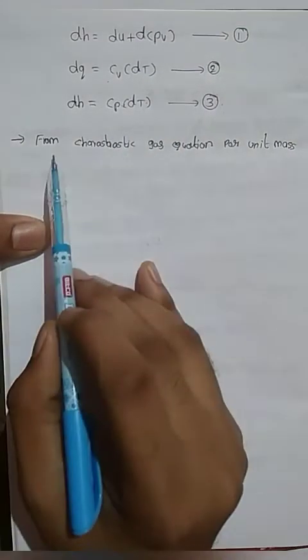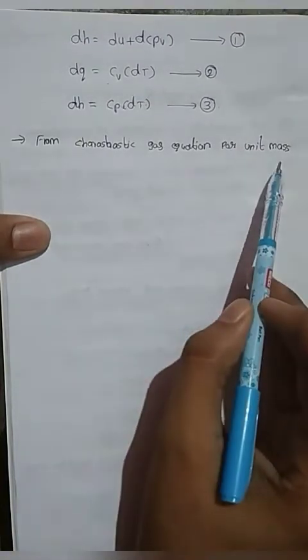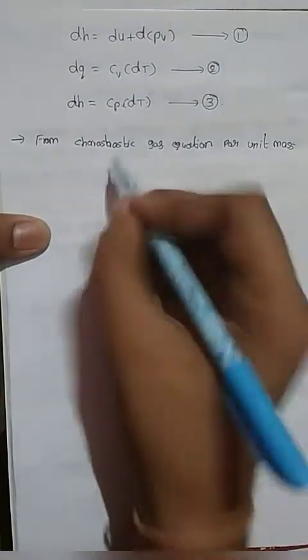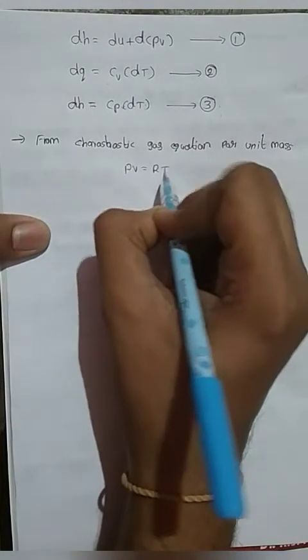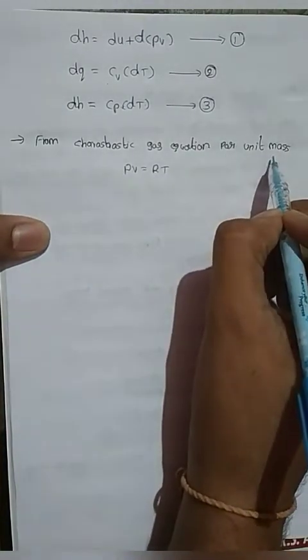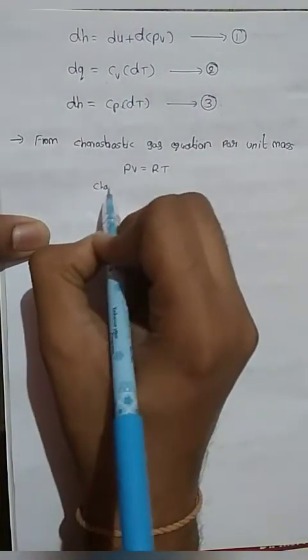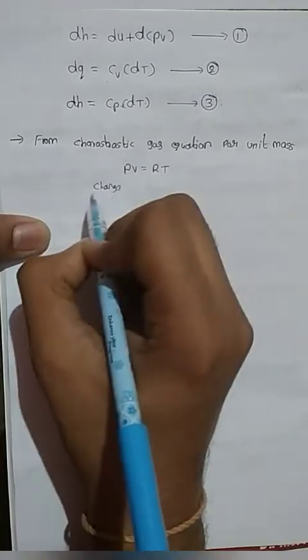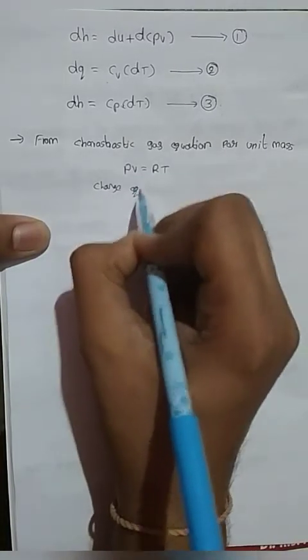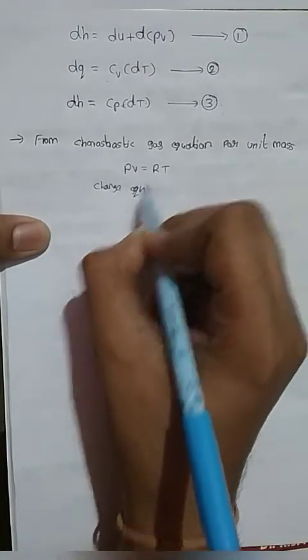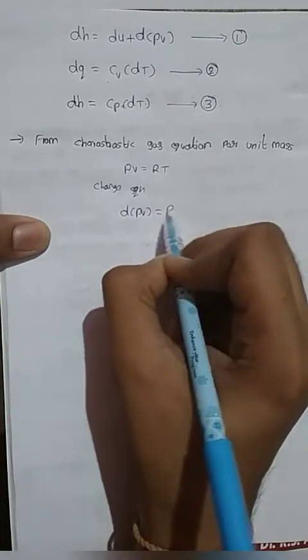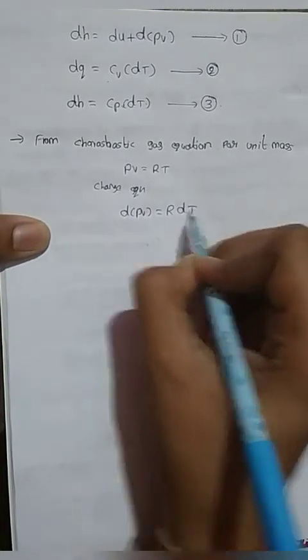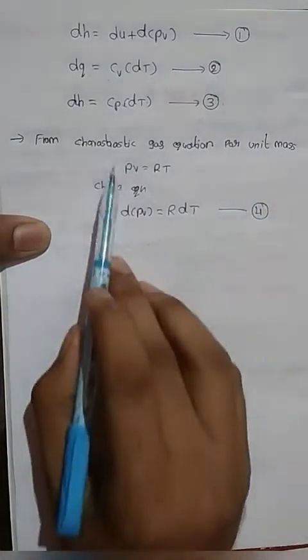Next, from the characteristic gas equation per unit mass: PV = RT, where R is constant. Therefore d(PV) = R·dT. This is equation number 4.